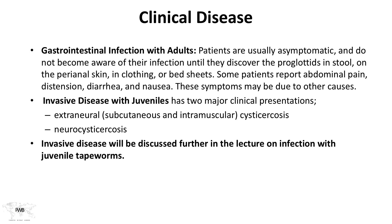Another clinical manifestation is invasive disease with juveniles — these are the two major clinical presentations that we as clinicians worry most about. There can be extraneural disease in the subcutaneous tissue or muscles, which we call extraneural cysticercosis. Or it can actually be in the nervous system, which we call neurocysticercosis. The invasive disease is discussed further in the lecture on infection with juvenile tapeworms.